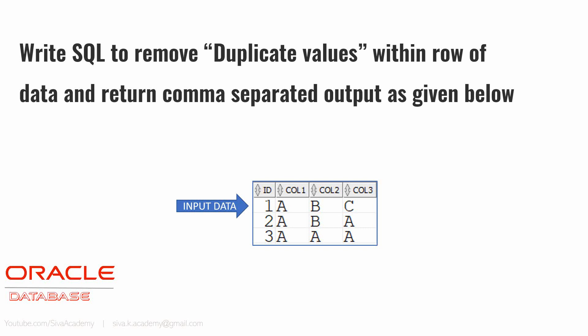So the question is: we are provided with a table which contains four columns — a column ID, column one, column two, column three. And the expectation is we need to write a query to remove the duplicate values in the same row, and then we need to display the comma-separated output.